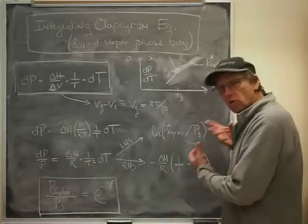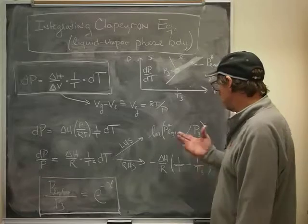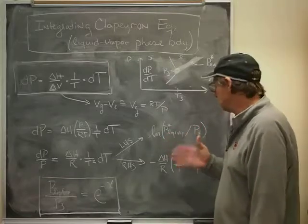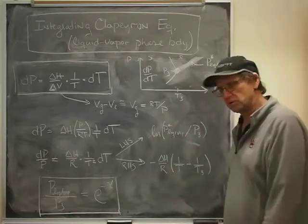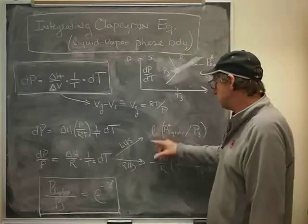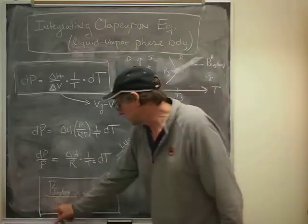But it's more convenient often to just solve for the pressure itself instead of the log of the pressure. So what I've done is taken the exponent of both of those sides. When I take the exponent of the log, I just get the argument there.